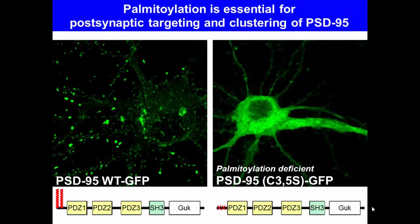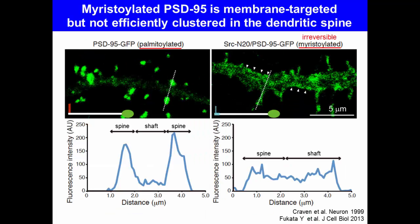Wild-type PSD95 is beautifully targeted to postsynaptic membranes and importantly forms clusters. In contrast, cysteine-mutated, palmitoylation-deficient PSD95 is localized diffusely in dendrites and the cell body. So, palmitoylation of PSD95 is essential for its postsynaptic targeting and clustering.